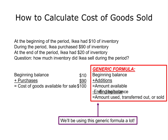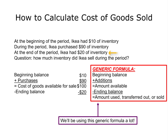Then we subtract the ending balance of inventory, which was $20. So if IKEA had $100 of inventory available for sale and ended up with $20, how much did they sell? Well, the cost of goods that they sold must have been $80. We'll use this generic formula a lot for this class — we'll use it again with more realistic numbers.